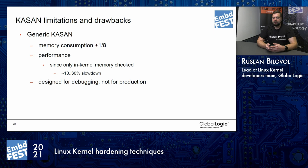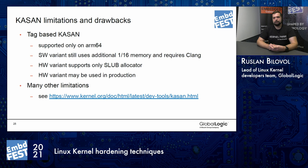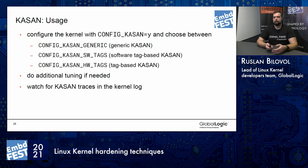Anyway, if you enable KASAN on your system and run your tests, it can detect many, many issues. The tag-based KASAN limitations: first, it's ARM64 only; it still uses shadow memory so there's pressure on memory; the hardware variant only supports slab/SLUB allocator; and the software variant requires Clang toolchain — if you build your kernel with GCC, which people usually do, it's not supported. There are also many other limitations. But you can check the link in the kernel development documentation to see the full restrictions.